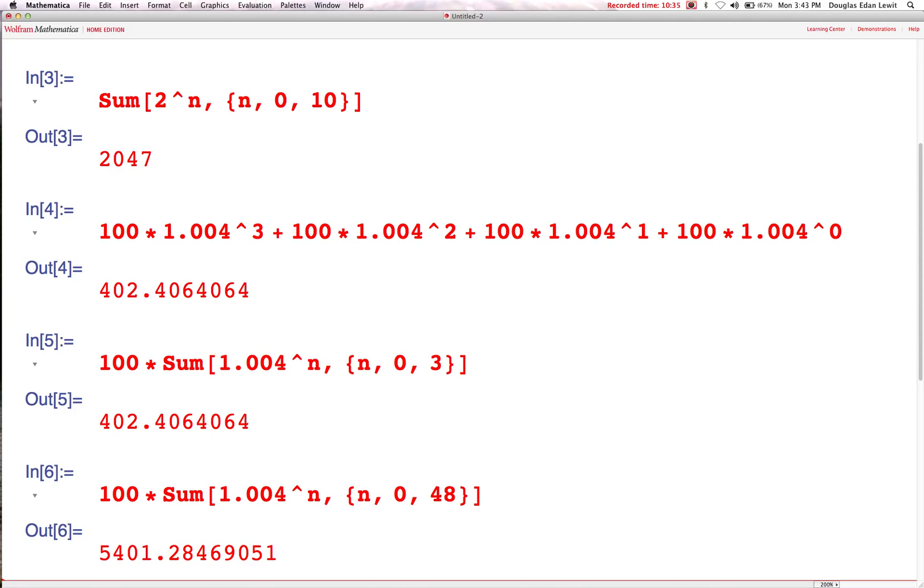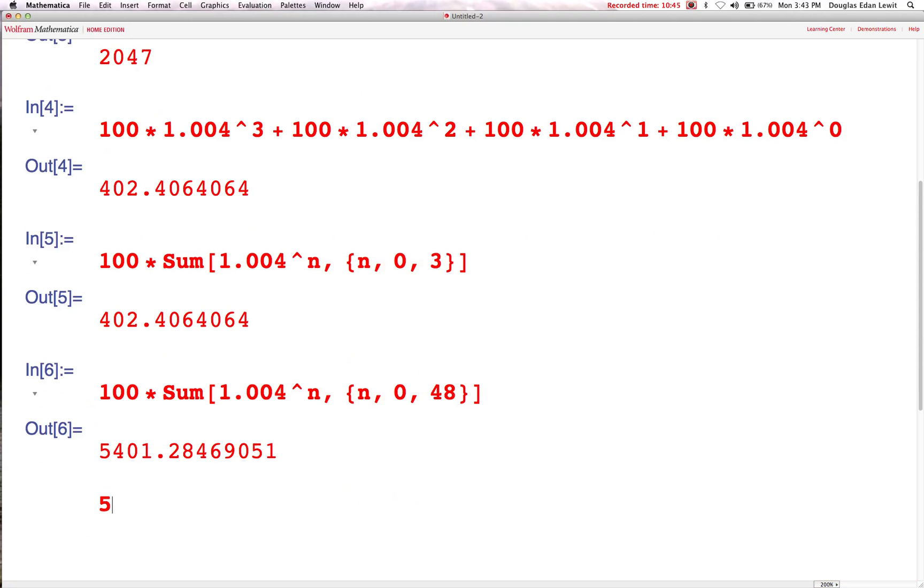Now, how much interest is that? How much interest did we make? Let's see. If you're investing $100 a month for 48 months and there's no interest, that's $4,800, right? So, $5,401.28 minus $4,800, what do you think that's going to be? Shift-Enter.